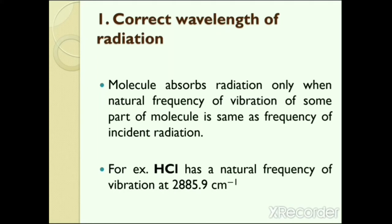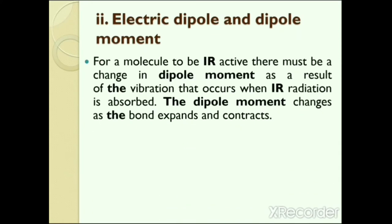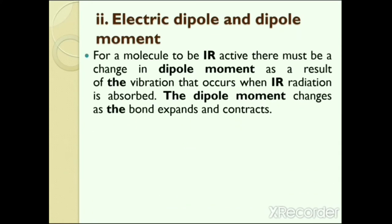So HCl will absorb radiation only when the radiation contains that frequency region. If this region is missing in the incident radiation, HCl cannot absorb any radiation. The second necessary condition is that the molecule must not only contain an electric dipole but also have a dipole moment. An electric dipole is defined as a couple of opposite charges separated by a distance. An electric dipole moment is a measure of the separation of positive and negative charges — that is, a measure of the system's overall polarity.